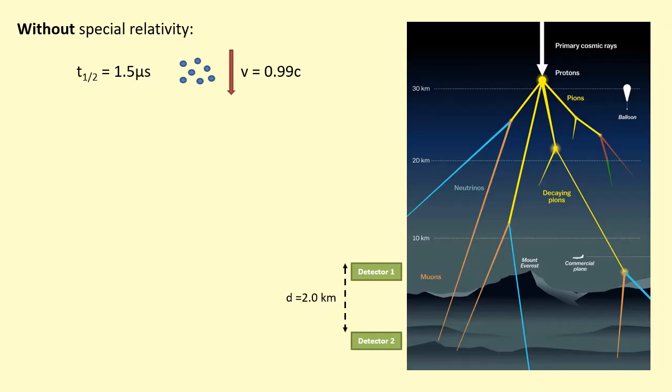Okay, firstly we're going to do it without special relativity to see what we expect to happen. So we have a bunch of muons here represented by these particles, and they're moving downwards at a velocity of 0.99 times the speed of light. So the time it takes for them to move from detector one to detector two is what we're going to work out first. So if they have traveled a distance of two thousand meters, if we divide it by the speed which is 0.99 times the speed of light, the time it takes for them to travel between these points is approximately 6.73 microseconds.